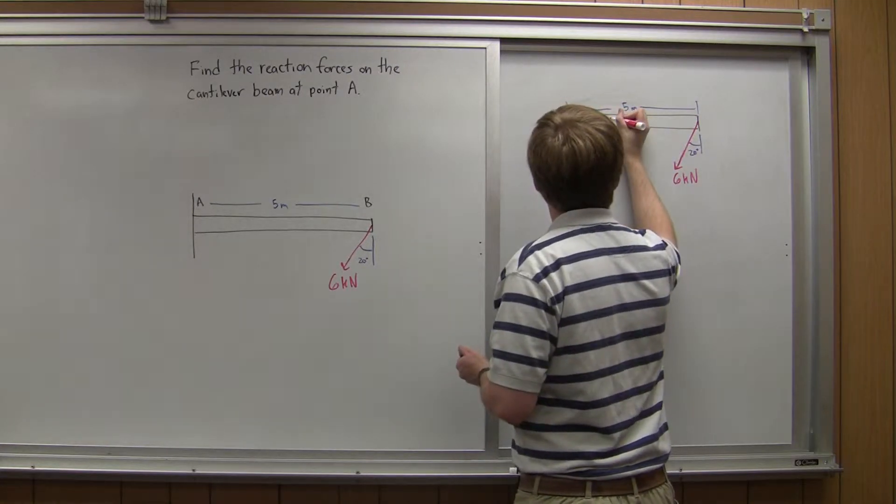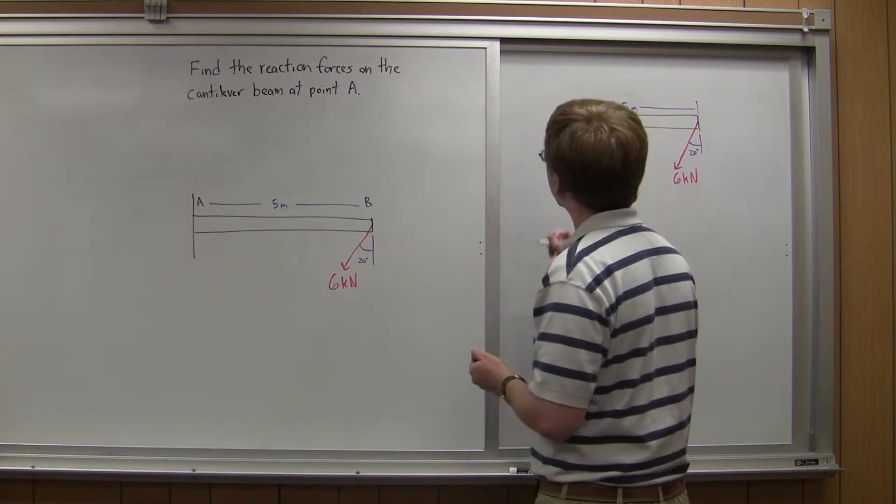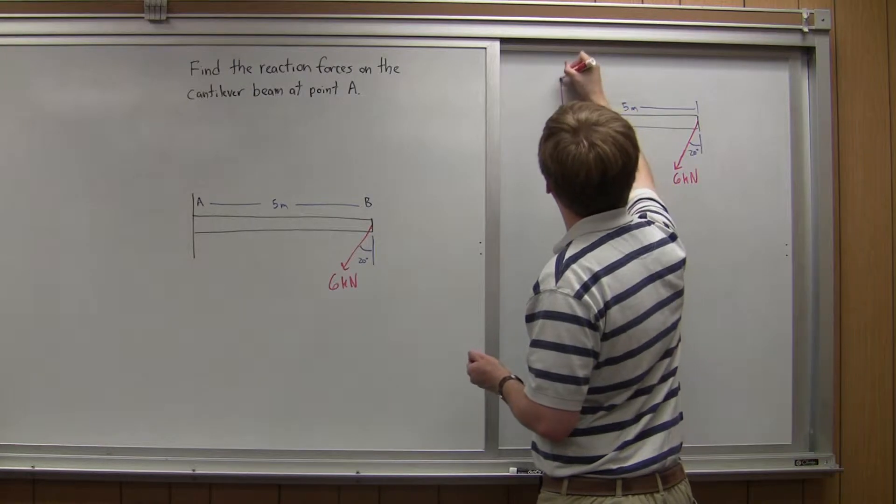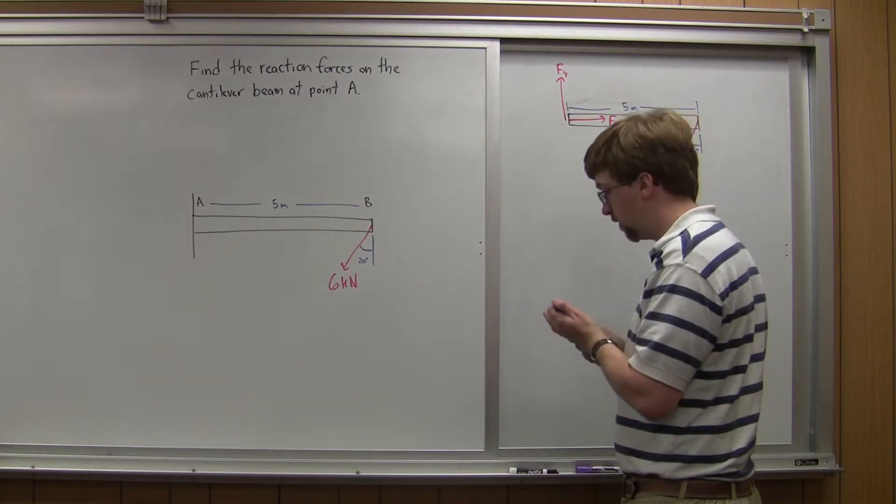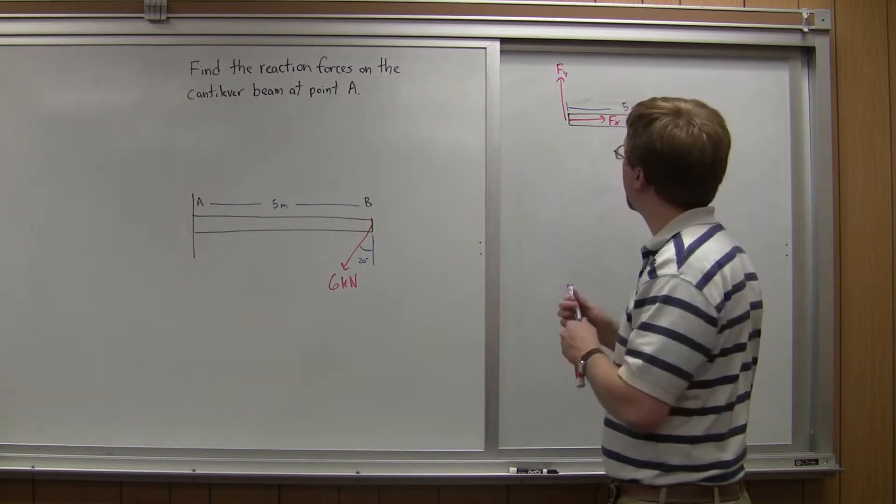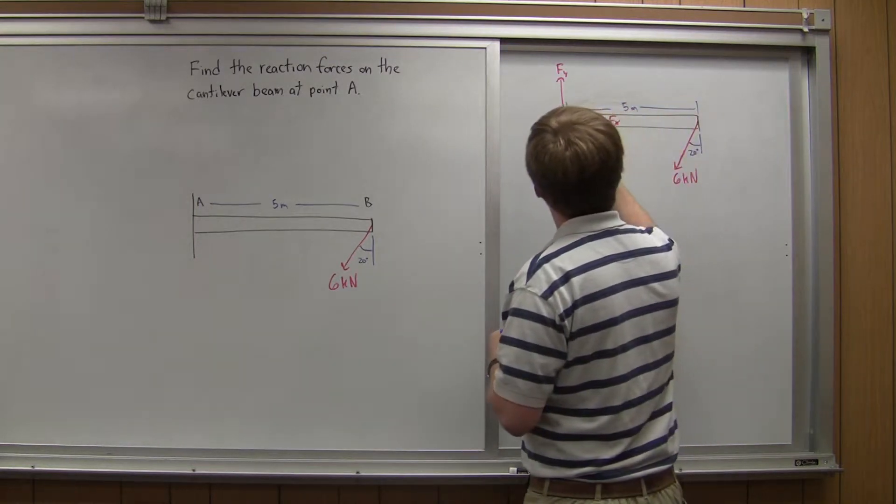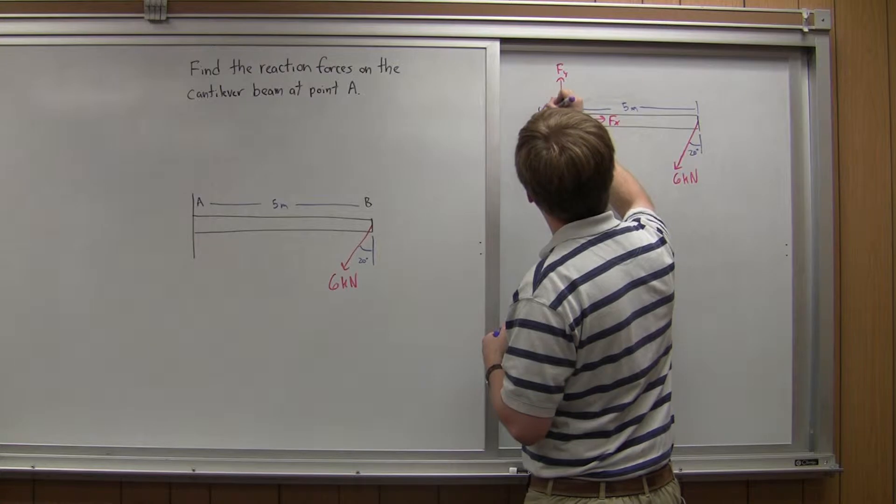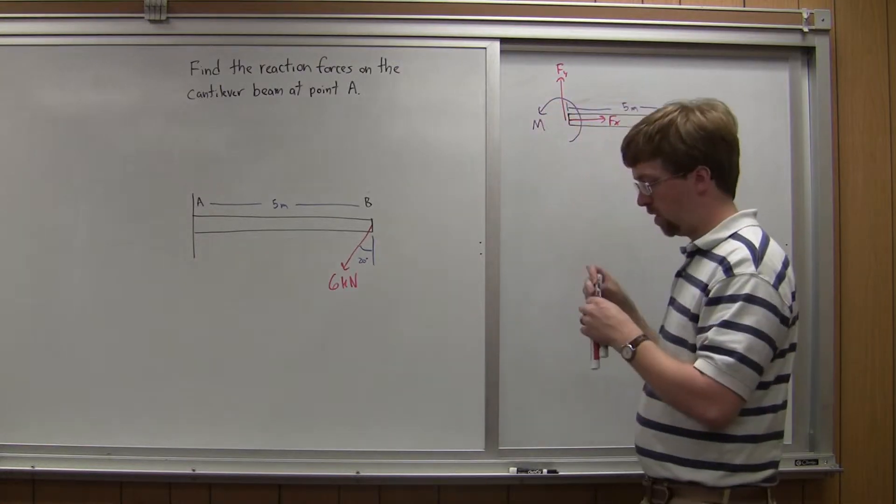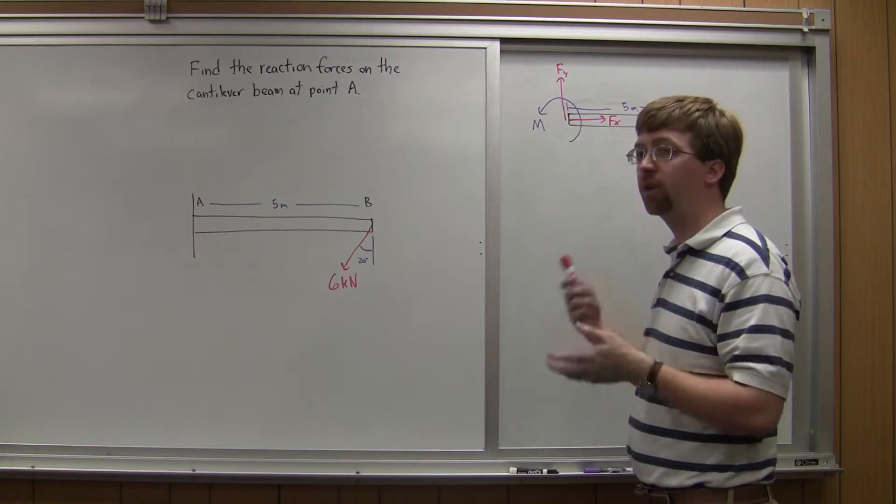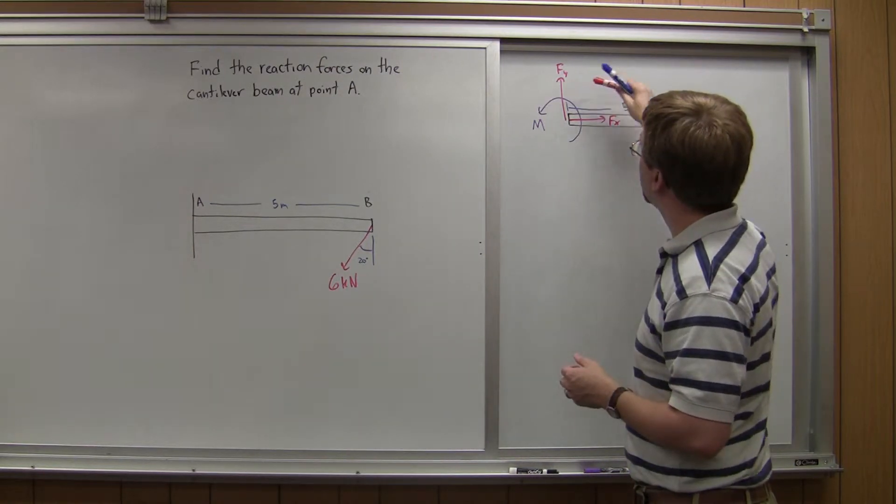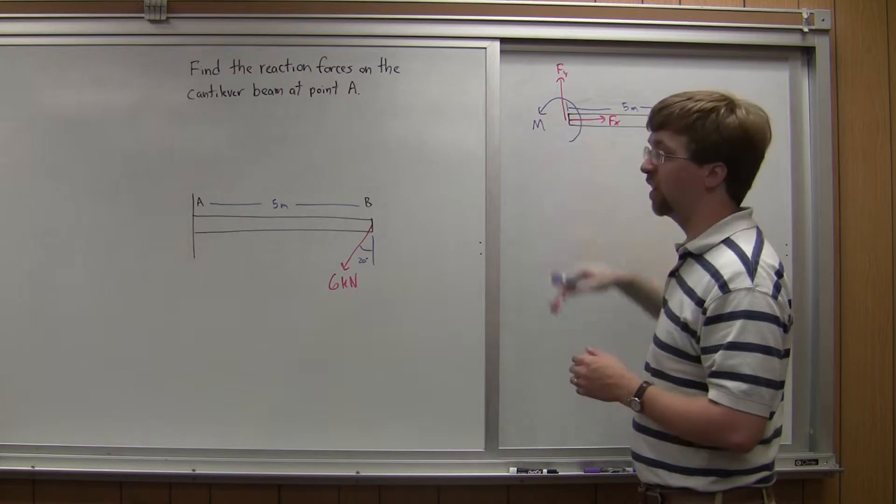I'm going to have forces in the x, a force in the x, a force in the y, and also at this fixed connection, I can have a moment reaction. I'm going to draw in my moment, like so, and label that M. Here, I've got just one connection point, but three unknowns: force in the y, force in the x, and the moment.